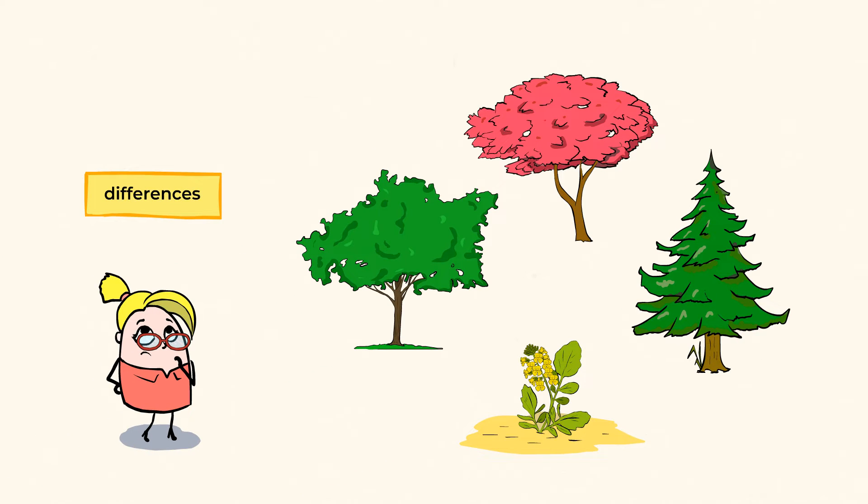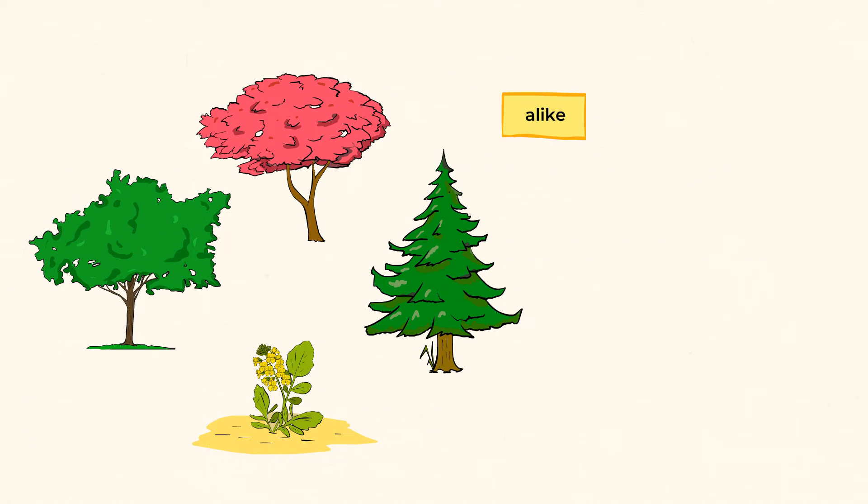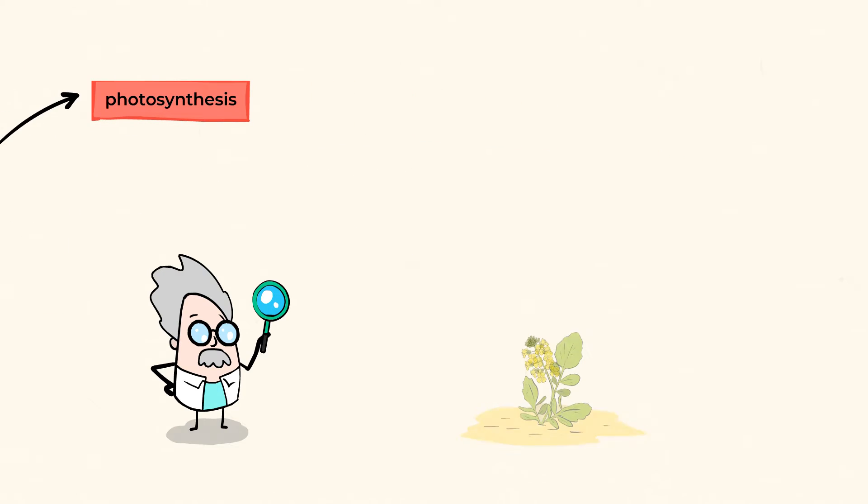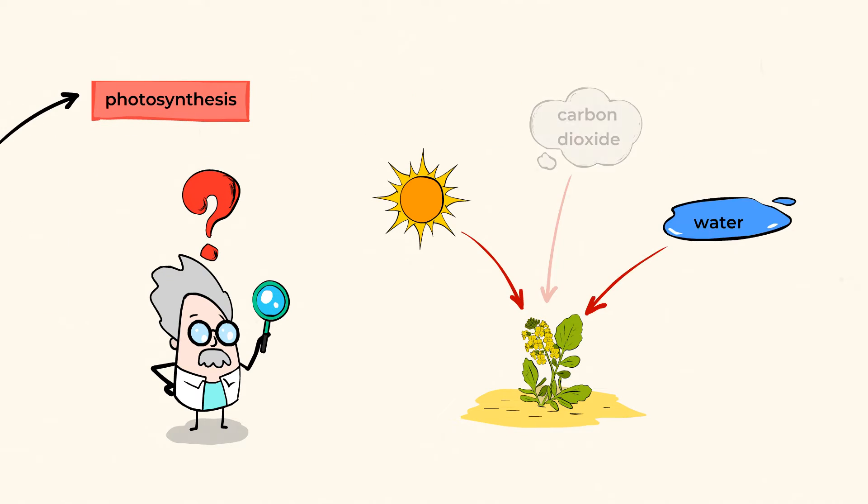Although plants differ in their shapes and sizes, all plants are alike in one way. They make their own food in the process of photosynthesis. Let's delve in a little deeper. How do they get the sunlight, water, and carbon dioxide?